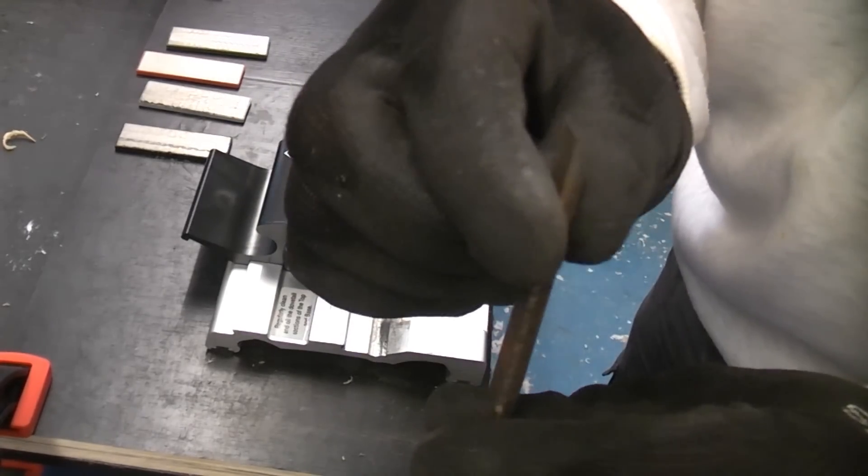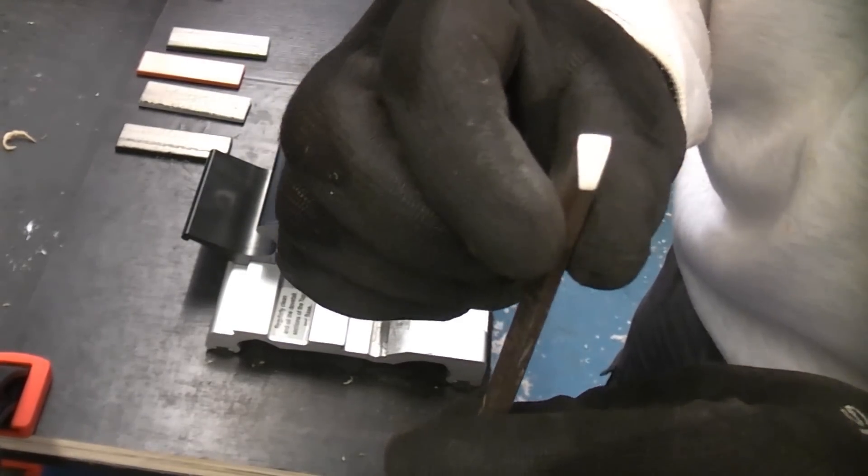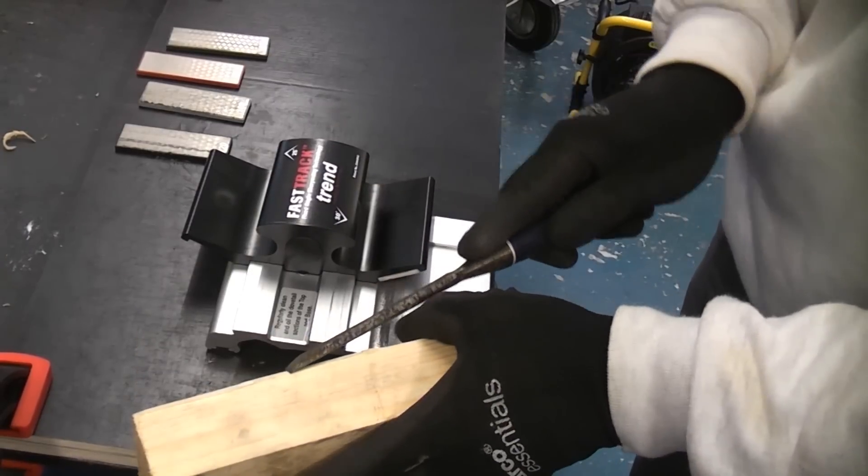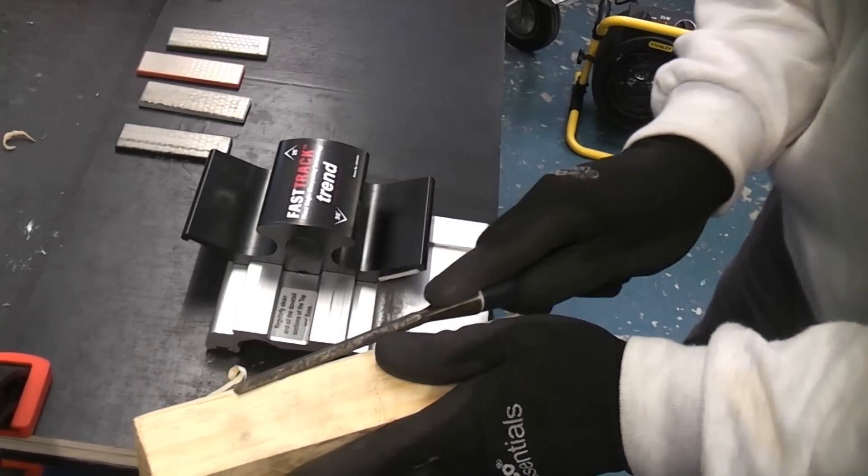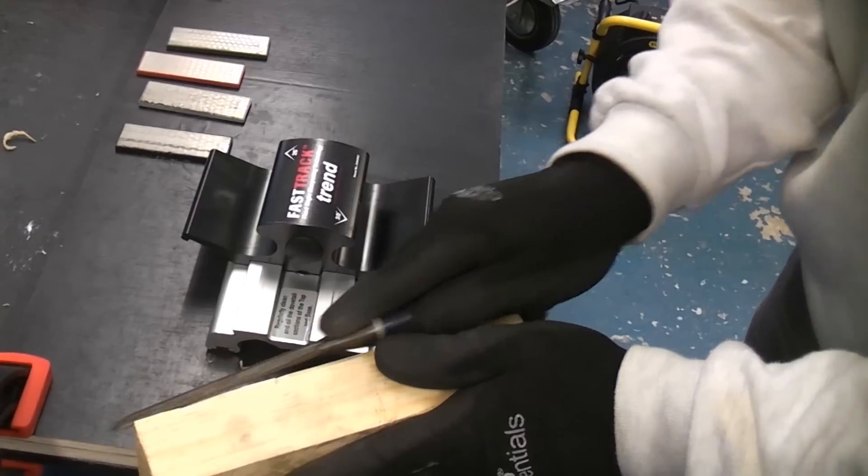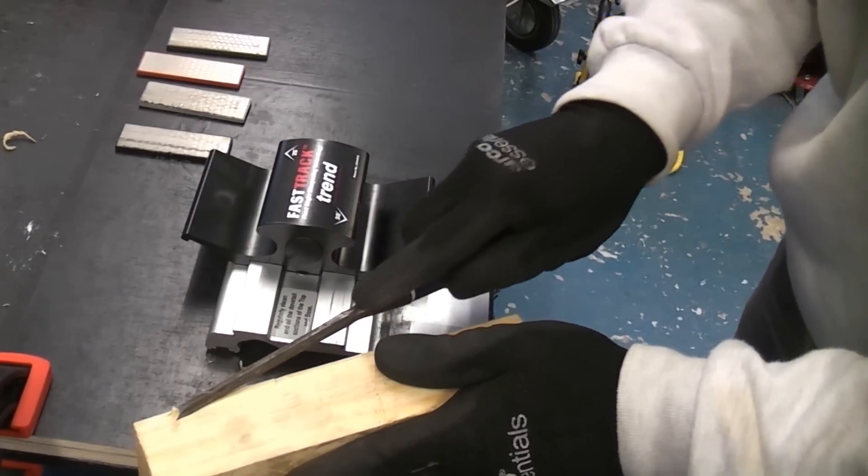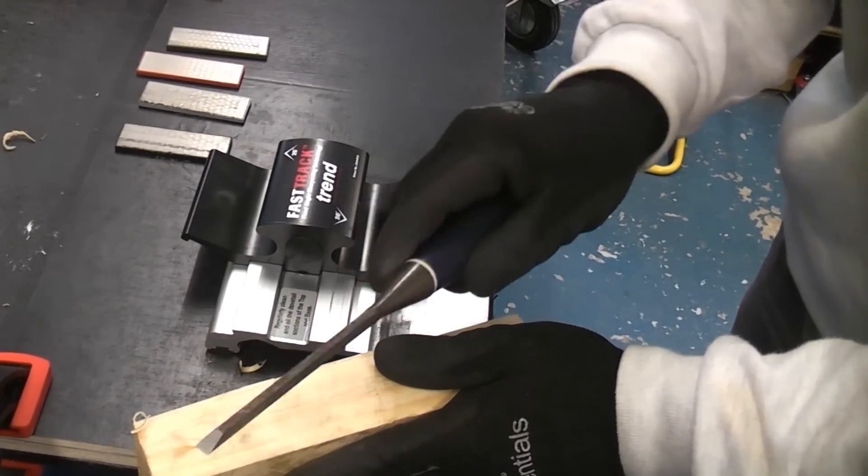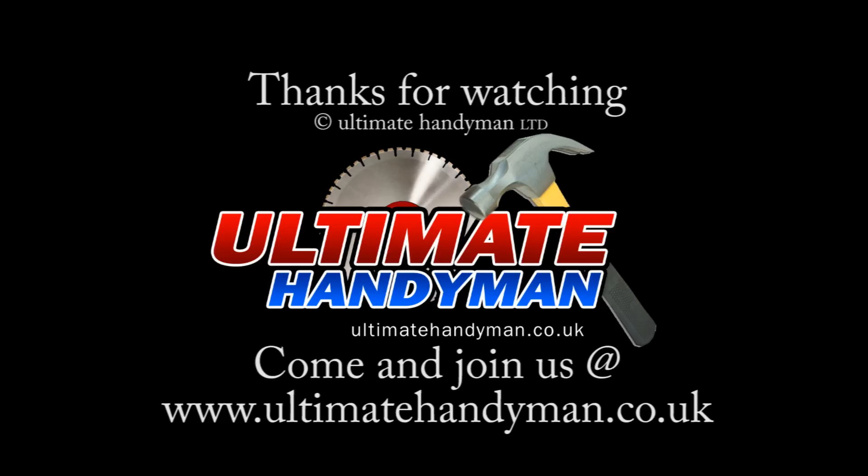Once you've done that, you are then left with an incredibly sharp chisel. I'll now just give you a demo on this piece of wood. You can see that that is incredibly sharp. You would have no problem at all using that chisel.